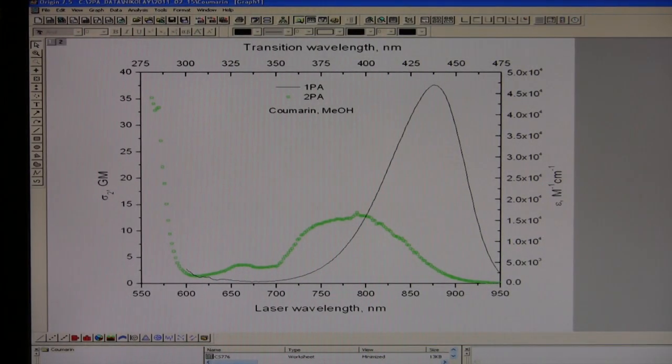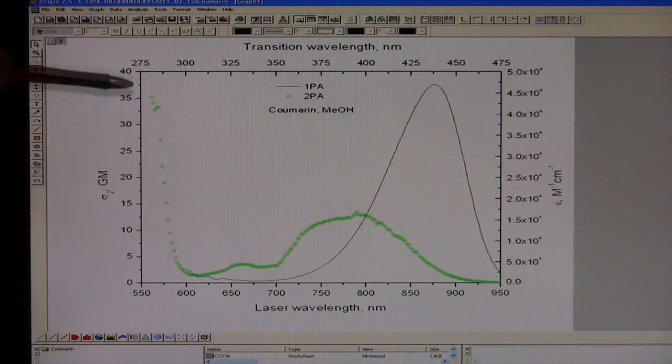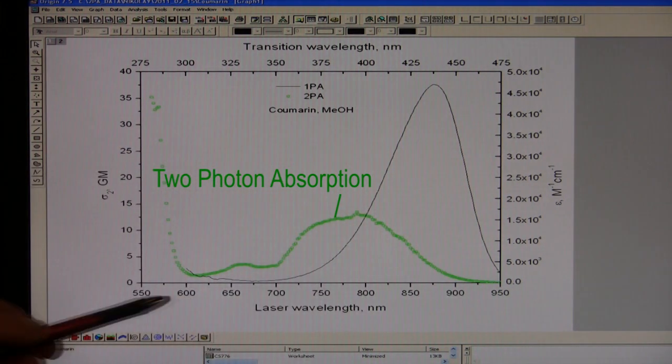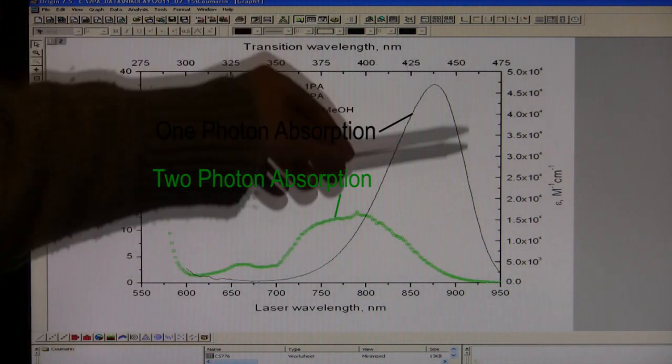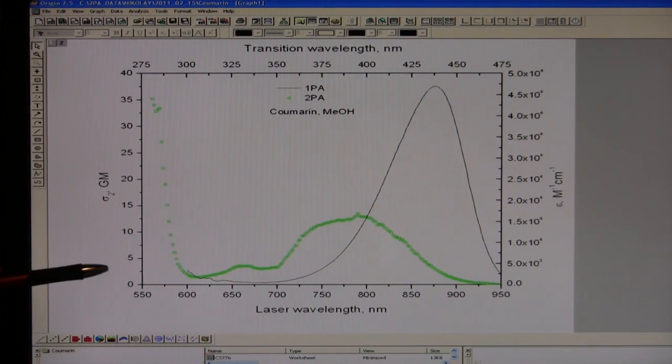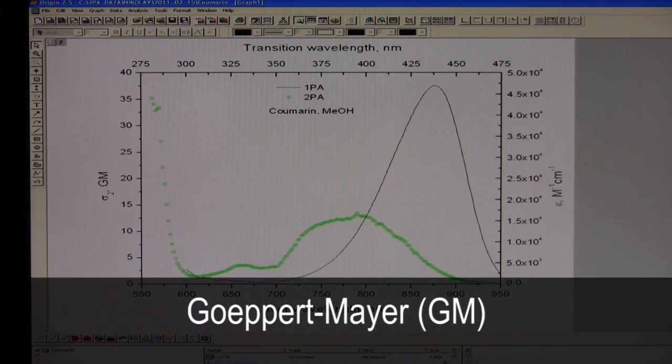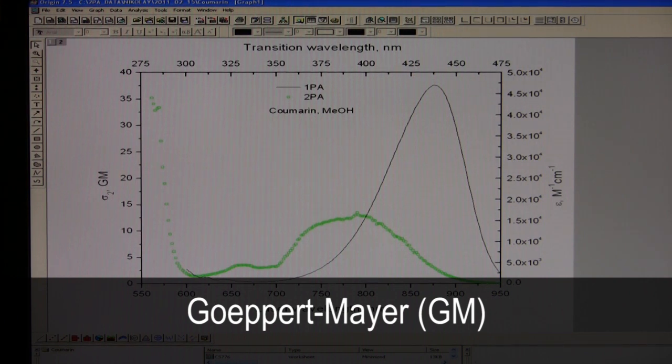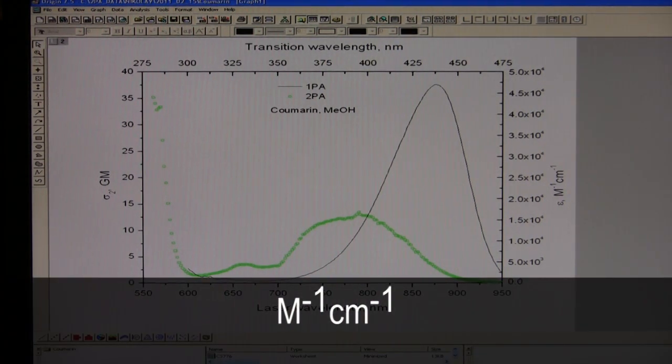After we measure all parts of the spectra with our spectrometer we go to origin and import data into it. And then we plot two photon absorption spectrum versus the laser wavelength, and we also put on the same plot one photon absorption of this molecule versus its transition wavelength. So the units for two photon absorption here is the Goeppert-Mayer, that's the unit called by the name of the person who initially predicted two photon absorption process.